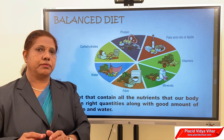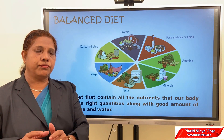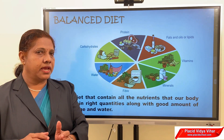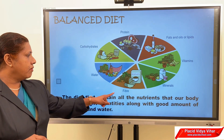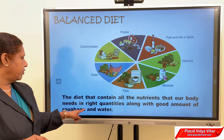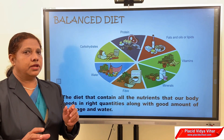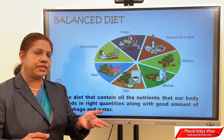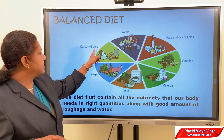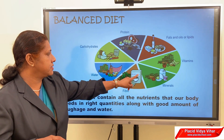We should make sure that all nutrients are present in the food that we eat, and we should also get a good amount of roughage and water. A balanced diet is a diet that contains all the nutrients our body needs in the right quantities, along with a good amount of roughage and water. These nutrients should be in right quantities — not too much of one or too little of another.